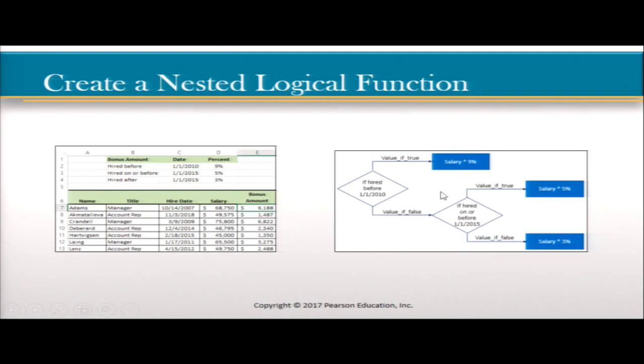Here they have a diagram to work it out before you see the actual formula. In this example, they have a bonus amount, date, and percent based on hire date. If you were hired before January 1st, 2010, you get a 9% increase. Hired on or before January 1st, 2015, you get 5%. If hired after January 1st, 2015, you get 3%.